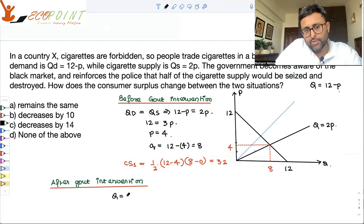Your supply function becomes just Q is equal to P. So you remember how exactly we are getting this. So earlier, I'm just explaining this point, you had that Q is equal to 2P, fair enough?